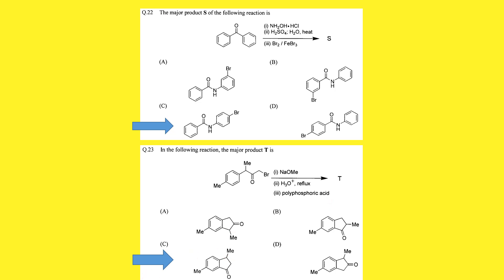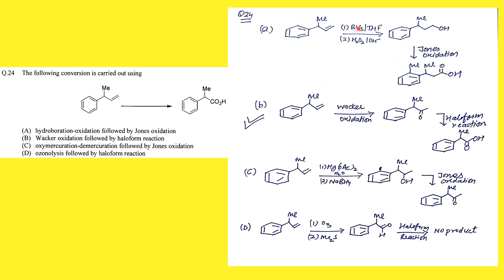For reaction sequences, first consider hydroboration oxidation: borane adds to the least substituted site, then oxidation gives an alcohol, and Jones oxidation converts alcohol to acid — giving an acid different from the desired product, so this is not the right option. The second option is Wacker oxidation. Wacker oxidation converts terminal olefins into ketones, which is a very good method for that transformation.